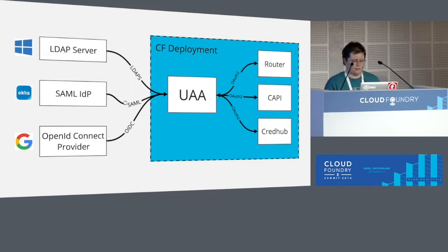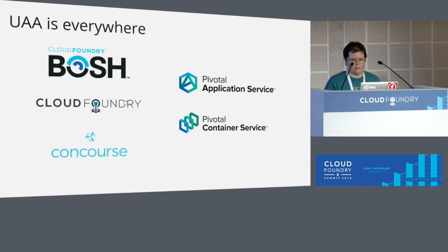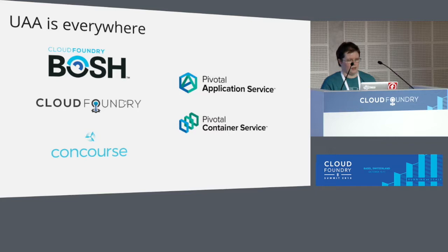This is a simple looking diagram but it's providing a huge value. As a result you see UAAs all over in our various different products and our ecosystem. Every BOSH director has a UAA inside of it. Every Cloud Foundry deployment has multiple UAAs inside of it. Many people are running Concourse and authenticating using UAA. The UAA is baked into numerous proprietary products and Pivotal's distributions. Just in the little while I've been at this conference I've talked to several other people about other products that are also using the UAA because this functionality is very valuable.